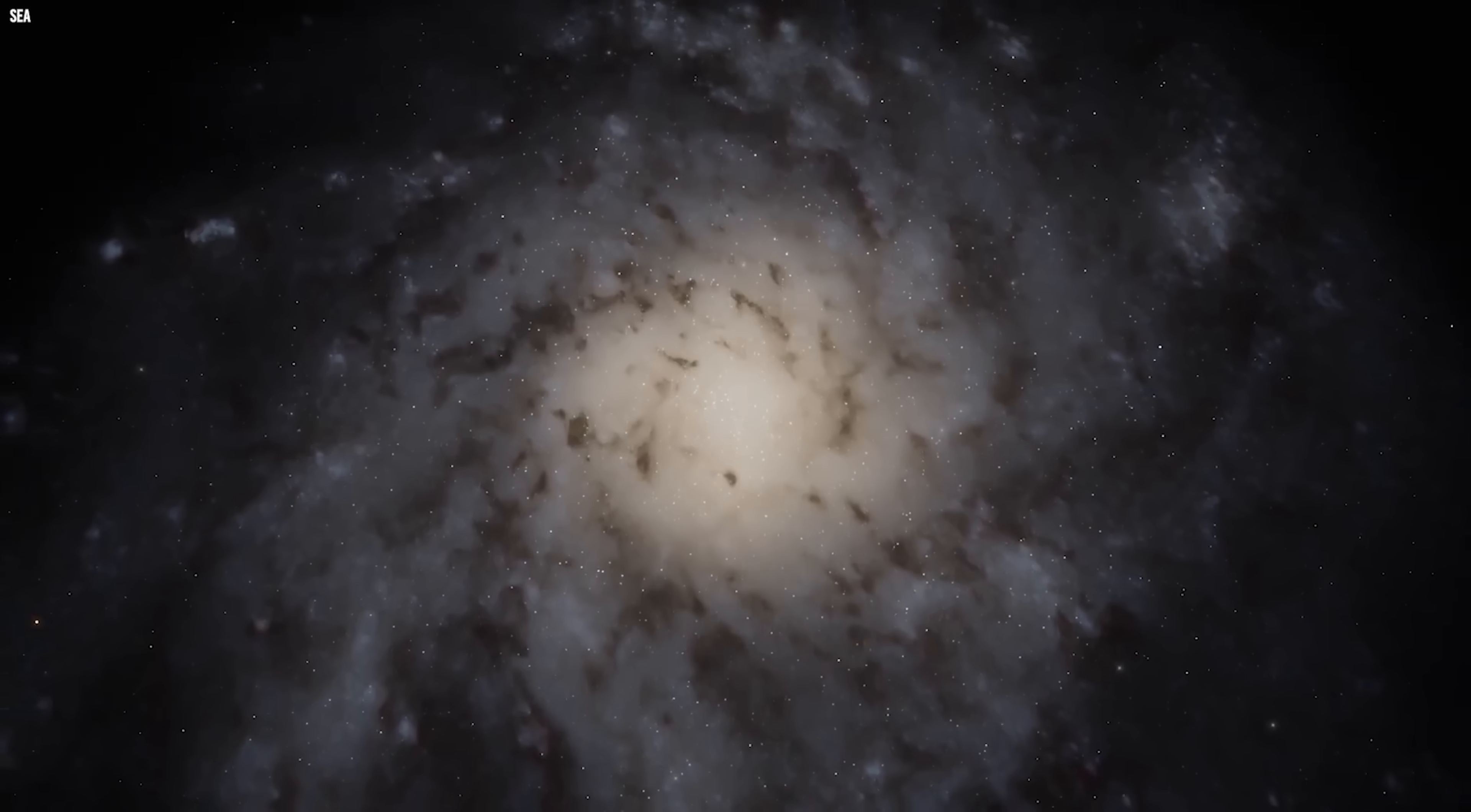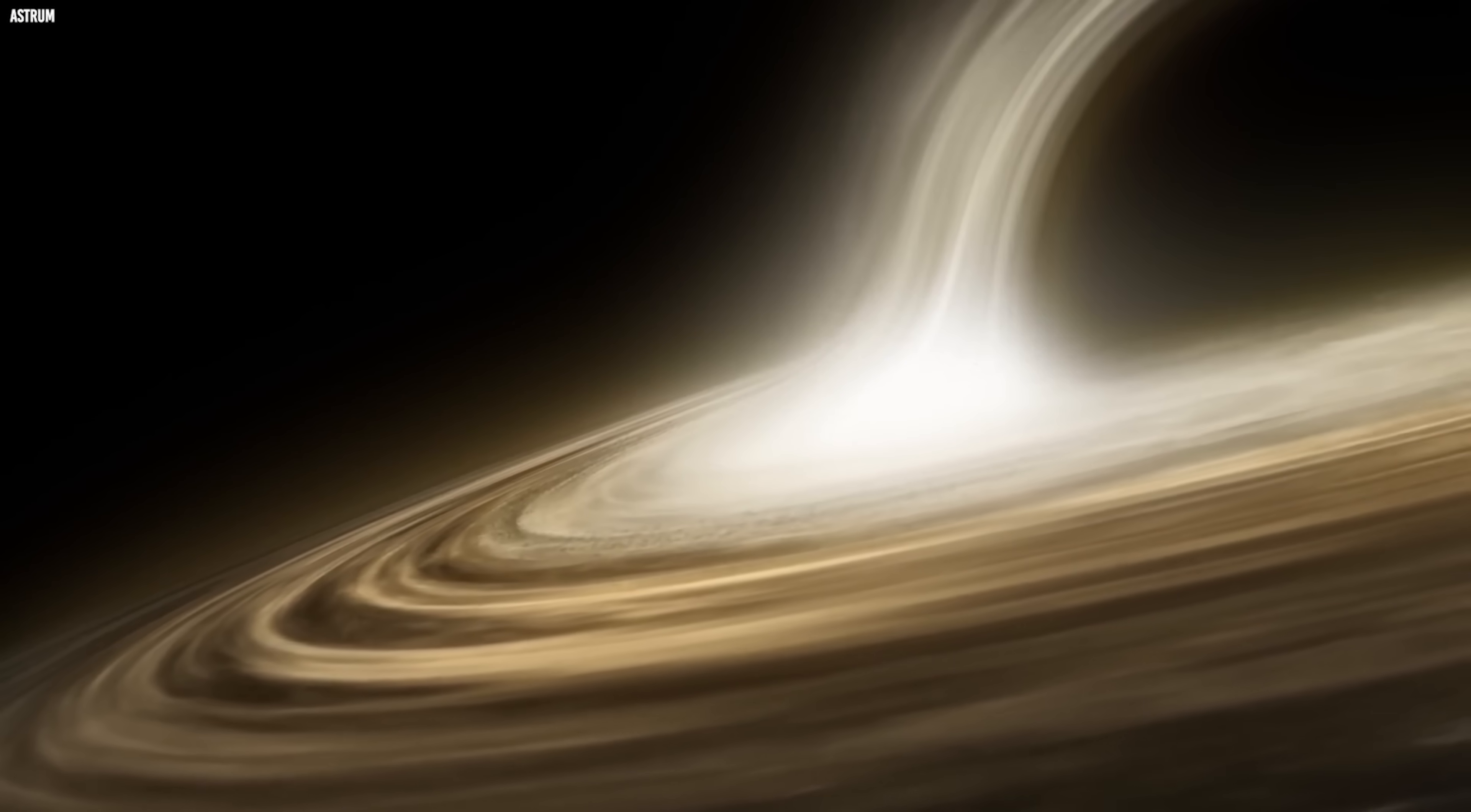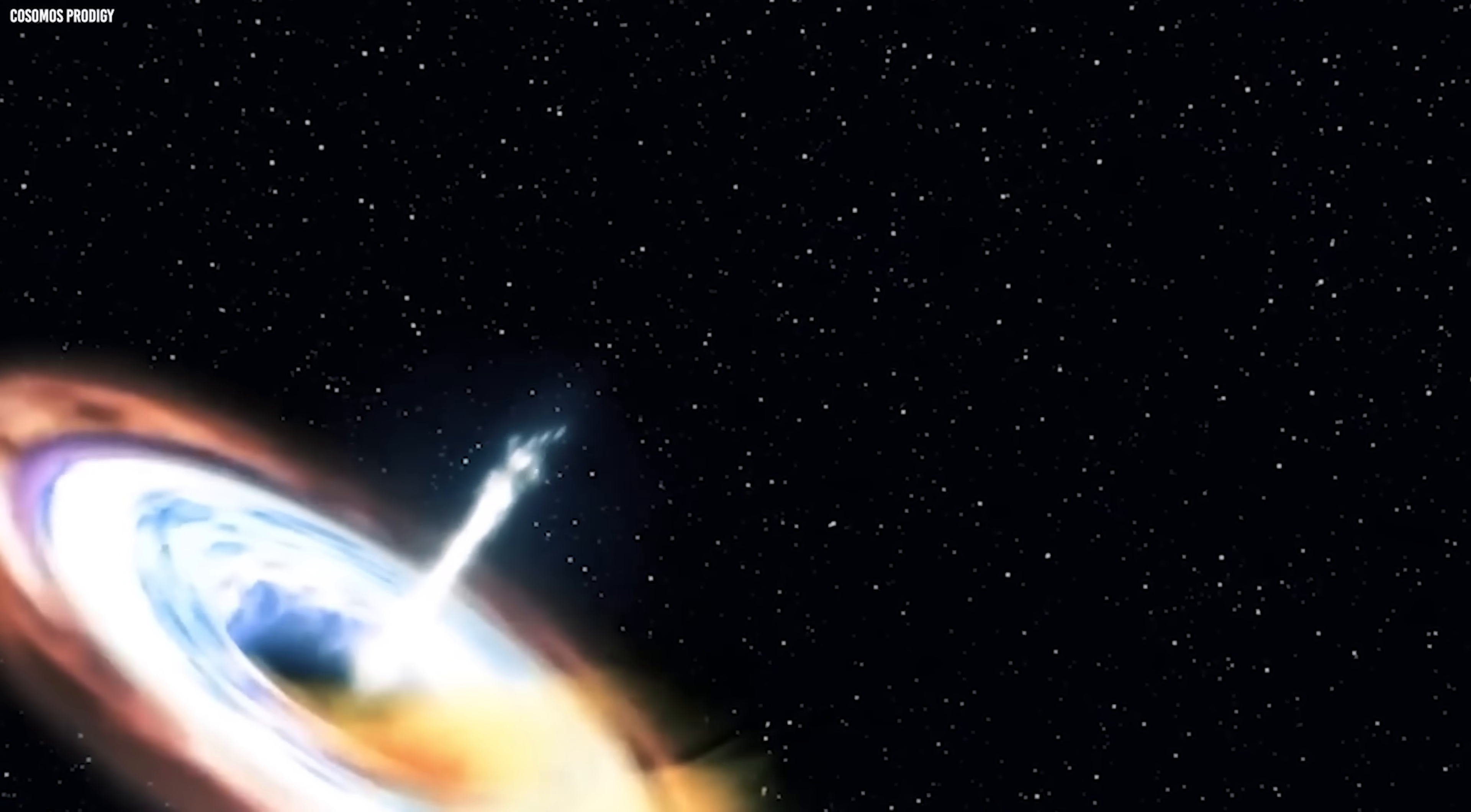To understand how shocking this is, you need to know how black holes normally grow. Stellar-mass black holes, the kind formed from dying stars, begin small. Dozens of solar masses.